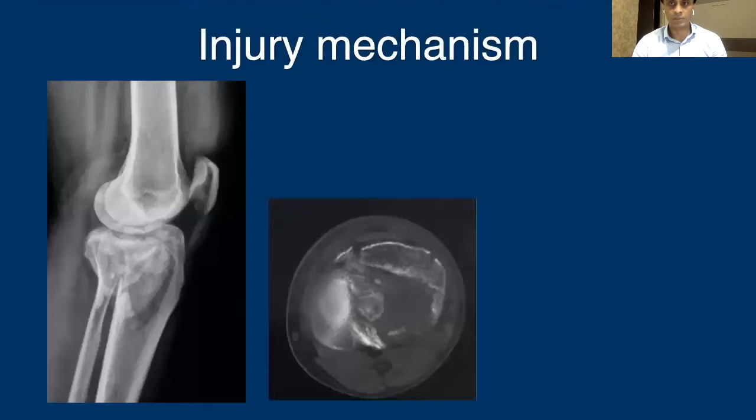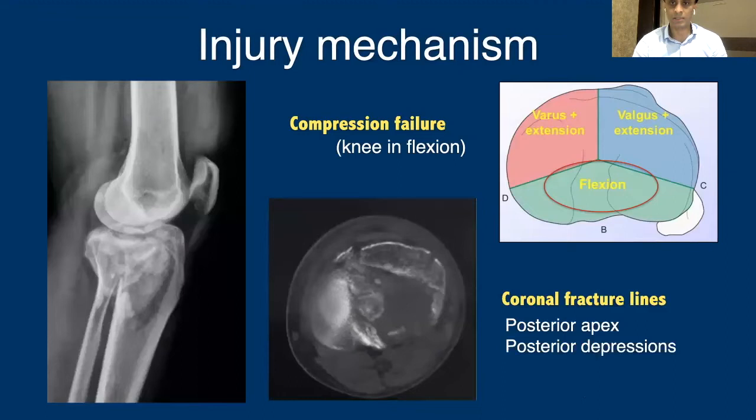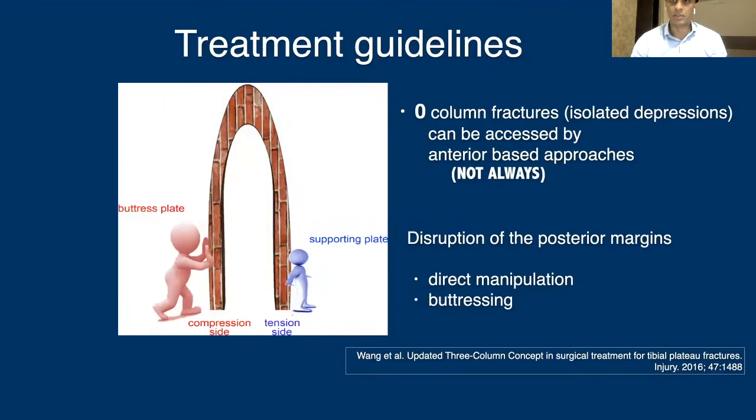Looking at the injury mechanism, these are typically shear injuries causing compression failure of the posterior part of the proximal tibia with the knee in flexion. This typically results in coronal fracture lines on the proximal tibia with fragments having posterior apices and depressions, which tend to present on the lateral side predominantly in the posterior aspect.